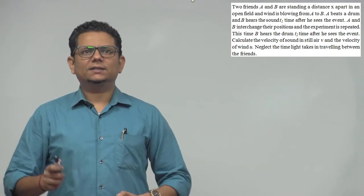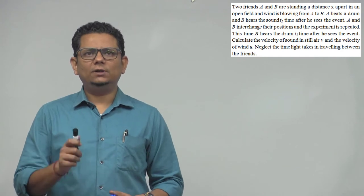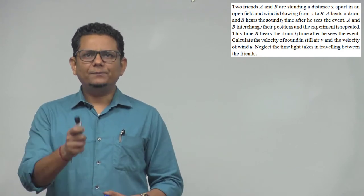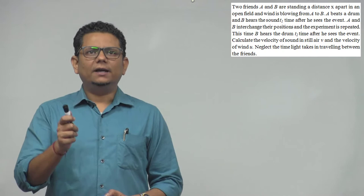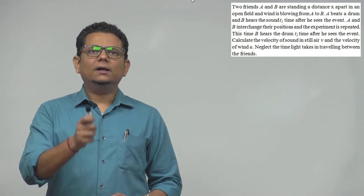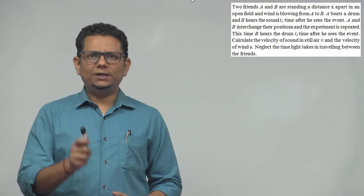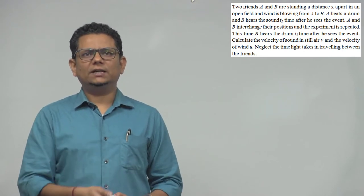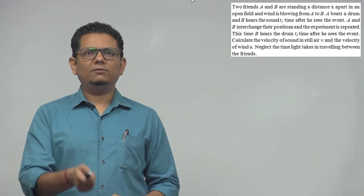The next question says two friends A and B are standing distance X apart in an open field and wind is blowing from A to B. A beats a drum, B hears the sound T1 time after he sees the event. A and B interchange their positions and the experiment is repeated. This time B hears the drum T2 time after he sees the event. Calculate the velocity of sound in still air and velocity of wind. Neglect the time light takes to travel between the two.